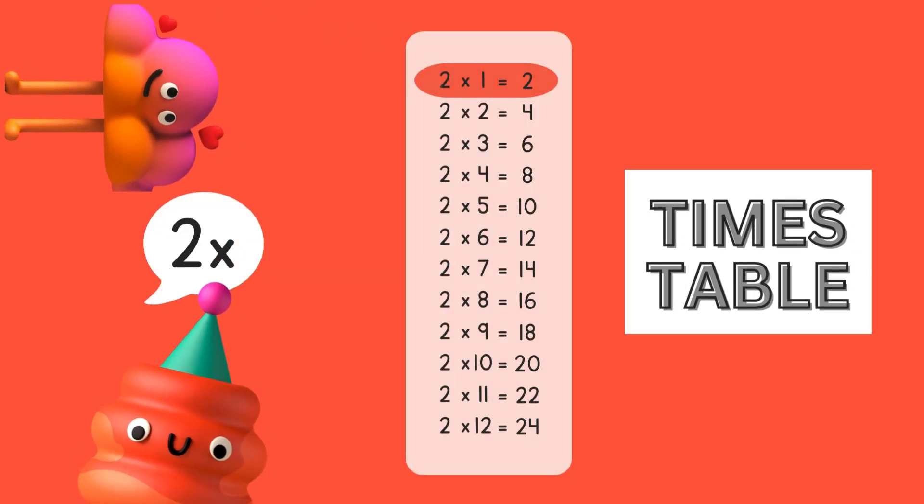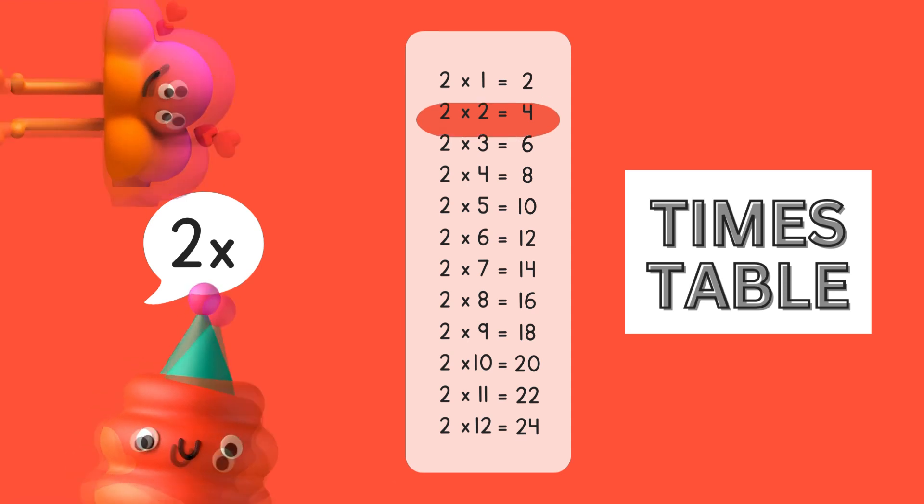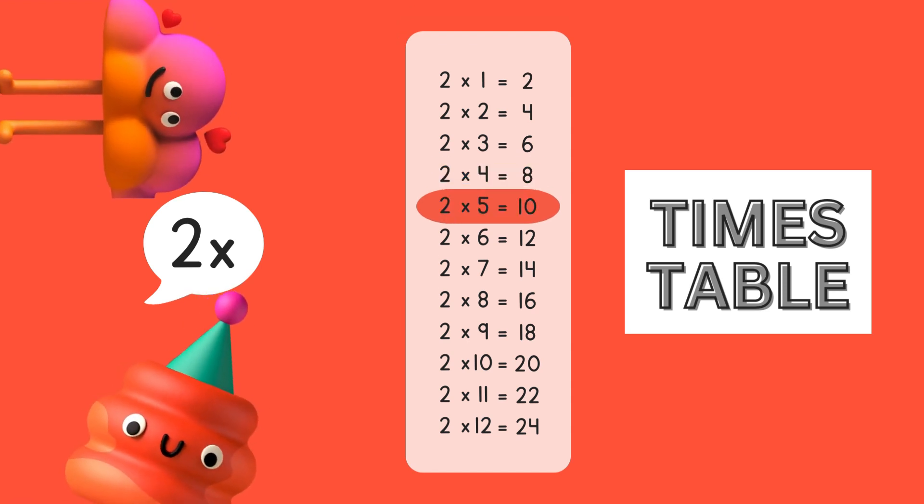2 times 1 equals 2. 2 times 2 equals 4. 2 times 3 equals 6. 2 times 4 equals 8. 2 times 5 equals 10.